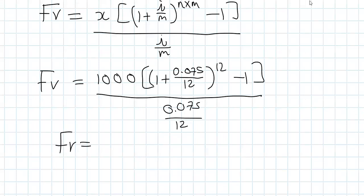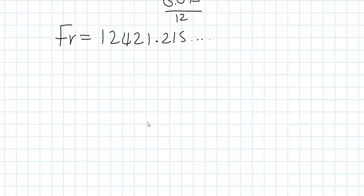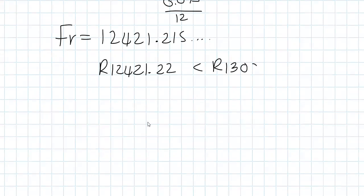The future value comes to 12,421.22 rand — rounding to two decimal places for money. This amount is less than the 13,000 rand needed, so we can deduce that Tino does not have sufficient funds.